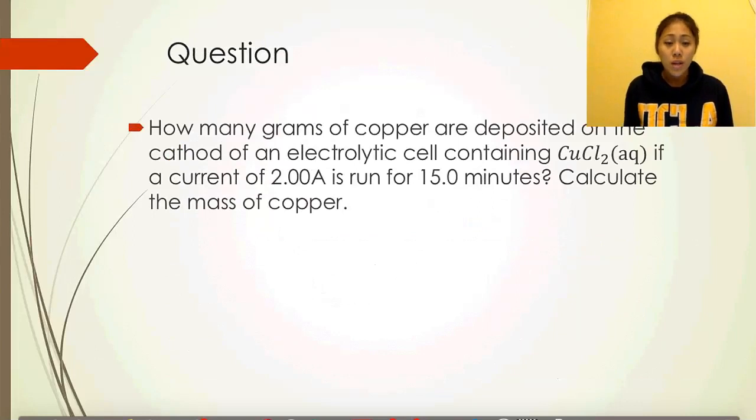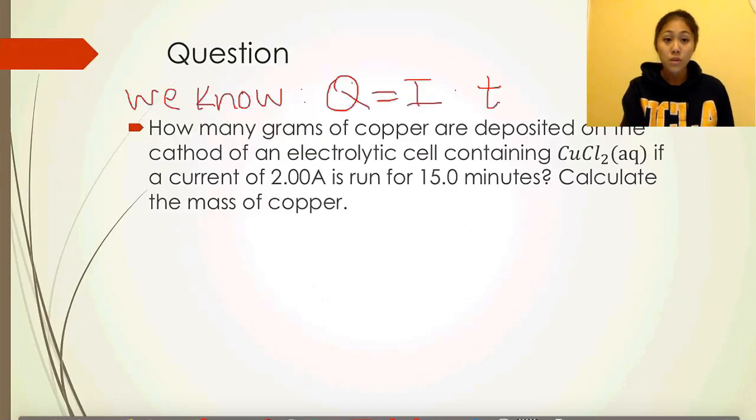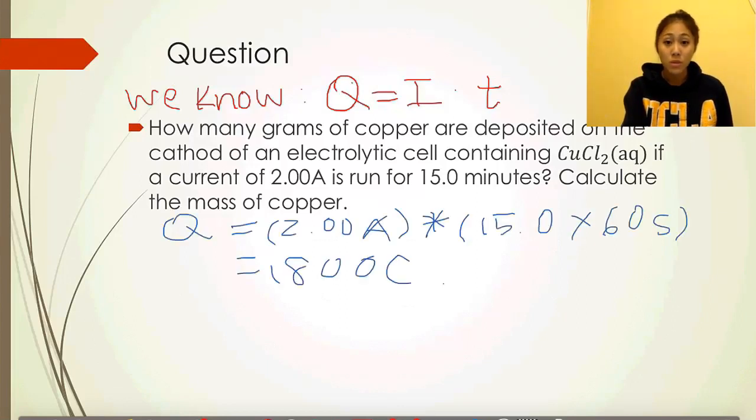Let's take a look at the first question. How many grams of copper are deposited on the cathode of an electrolytic cell containing copper two chloride if a current of 2.00A is run for 15.0 minutes? Calculate the mass of copper. First off, Q equals I times T. We plug in 2 amps and 15 minutes. Time is usually in seconds, so we convert 15 minutes to seconds, and this gives us a total of 1800 coulombs.